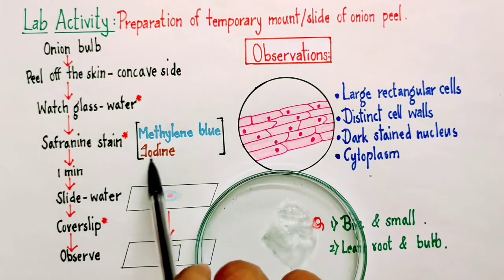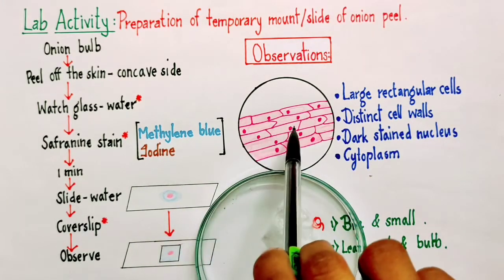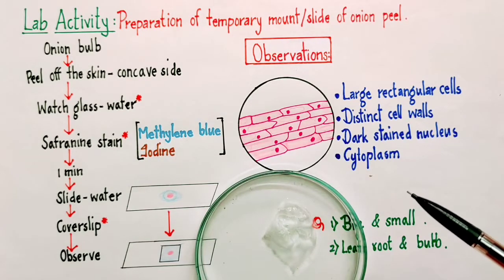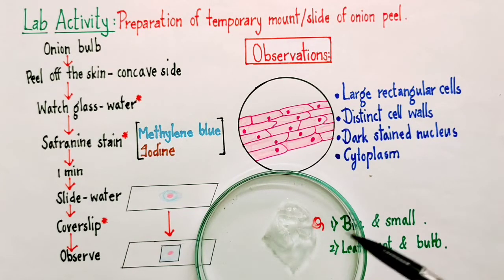If you use iodine, your cells are going to appear in the shades of brown. Some part will be darker brown, some part will be light brown in color.